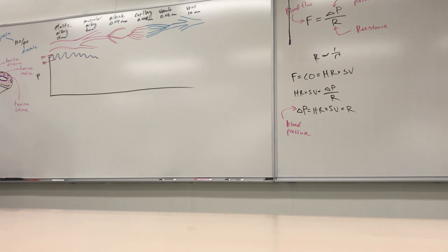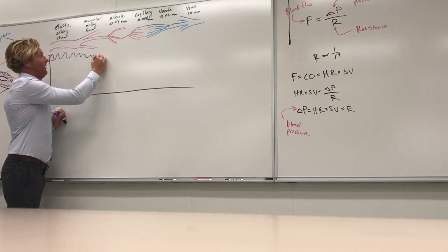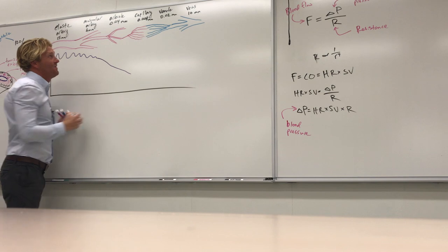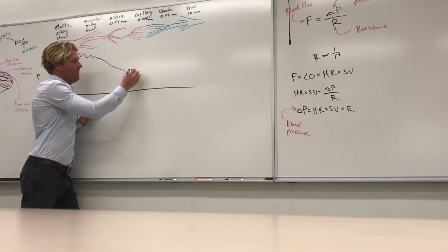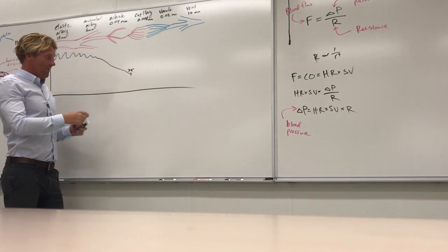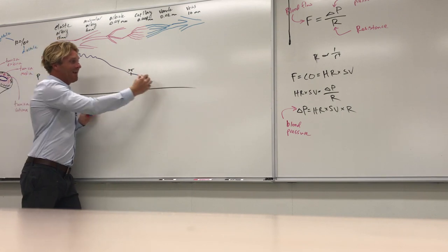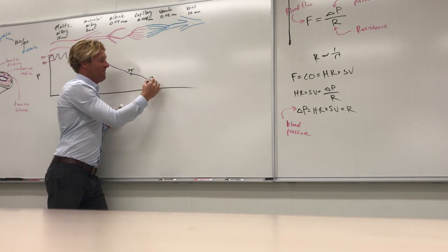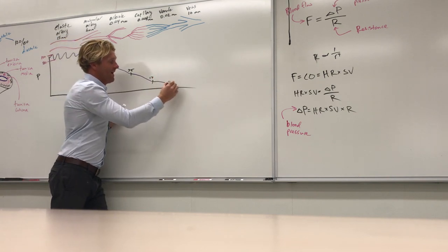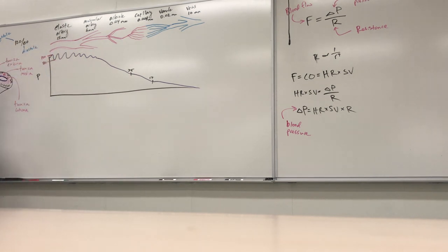By the time we get to the arterioles, pressure drops way down. At the capillaries, pressure is only about 35 mmHg. It continues to drop — leaving the capillaries it's about 17 mmHg. In the venules and veins it continues dropping, reaching zero by the time blood returns to the heart.